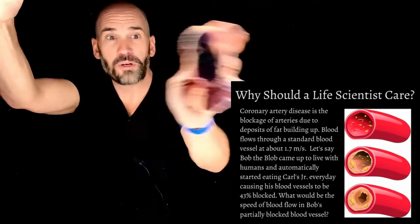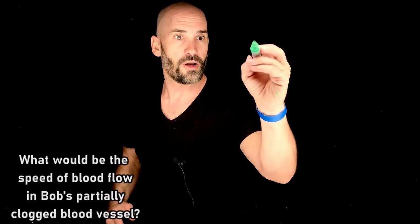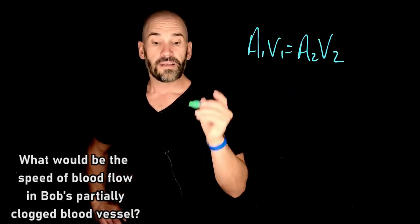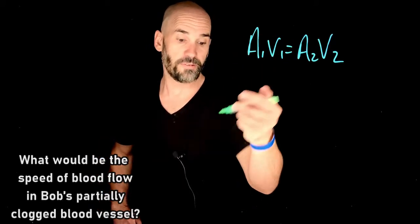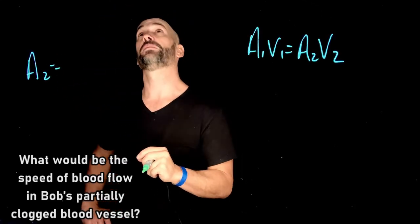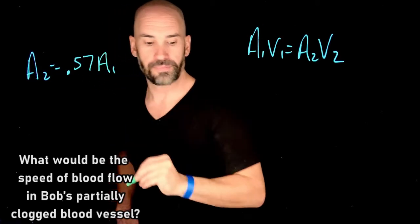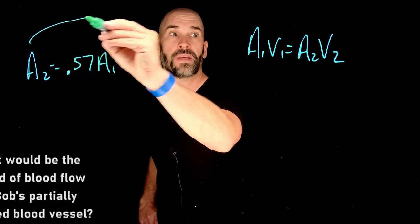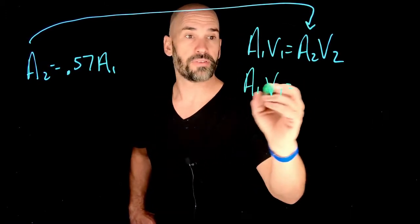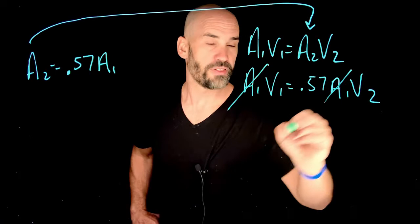So guys, we could just use the continuity equation to solve this very easily. Let's do it. Continuity equation, we know, is just A1 V1 equals A2 V2. So let's suppose in a normal artery, A1 is the full area of an artery, we'll just call it A1. But we know that A2, so it's 43% blocked, which means that that's going to be 57% open. So A2 is just going to be 0.57 times the original A1. So we can automatically replace A2 with that. So in other words, we have A1 V1 equals 0.57 A1 V2. That cancels out with that. Those are both the same area.